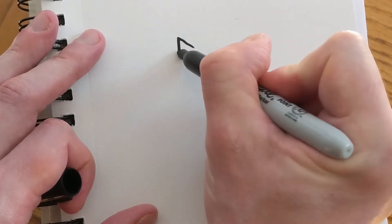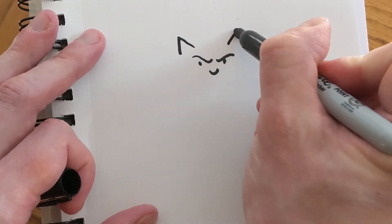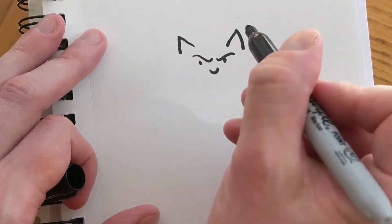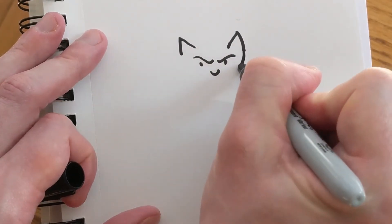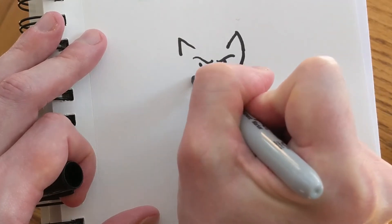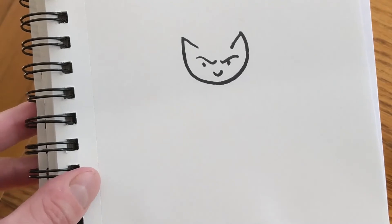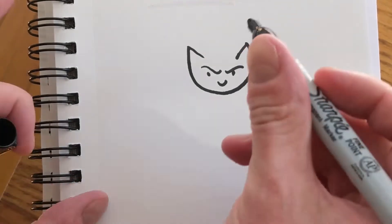Next, I'll start with her pointy triangle cat ears. And then I'll draw just a curve for her chin. That curve can be a little tricky to draw, but it doesn't have to be perfect.